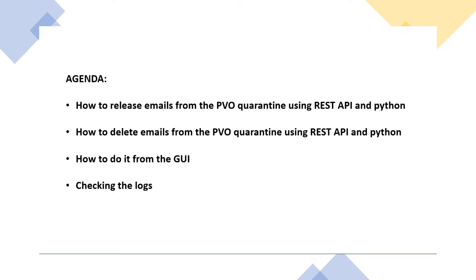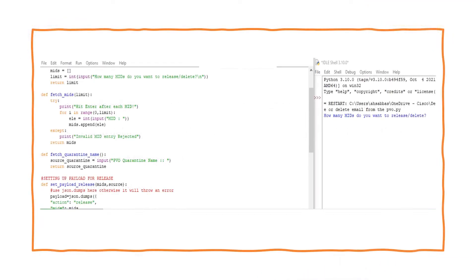We're also going to jump to the GUI of the ESA and try to do the same from there. After that, we'll check the logs to see what we find when we release and delete emails. Now let's jump right into it — this is the script I was talking about, and it's almost similar to the script we used in the last video.